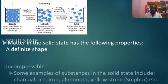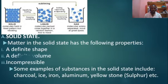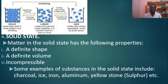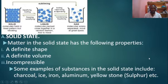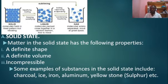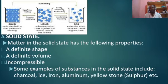In the solid state, matter will have a definite shape and a definite volume, and it is incompressible. Some examples of substances in the solid state include charcoal, ice, iron, aluminum, yellowstone, and salt.